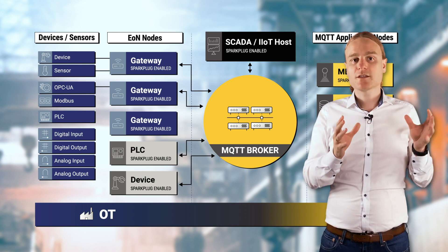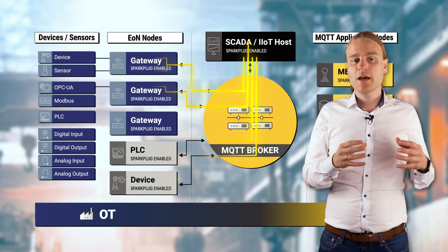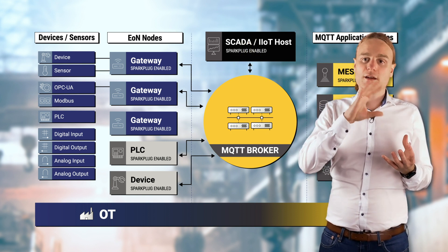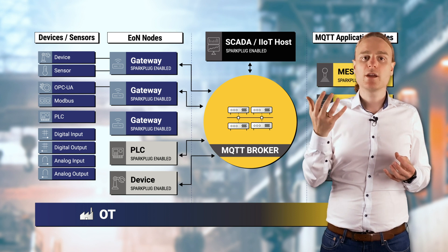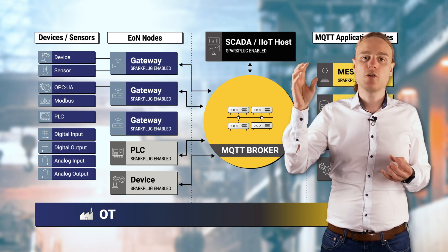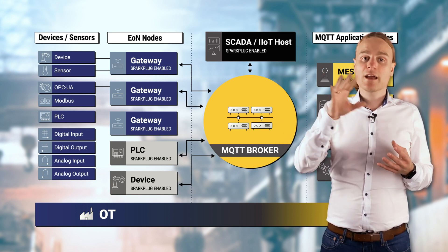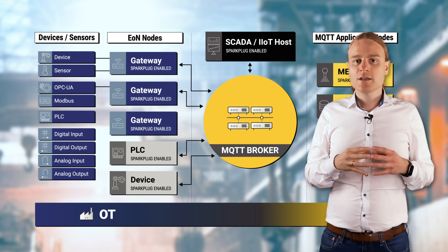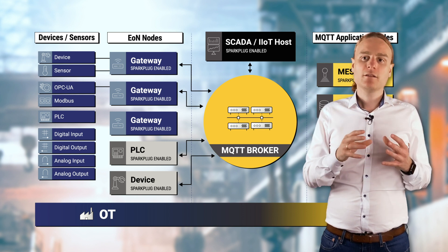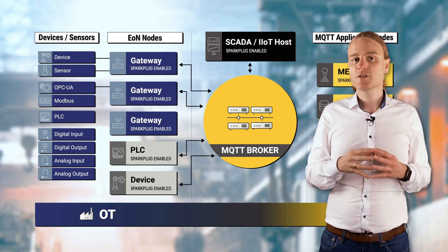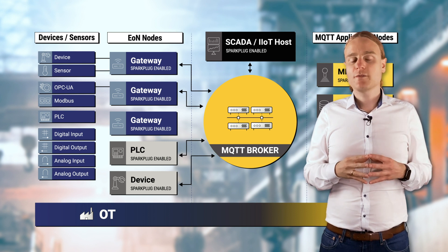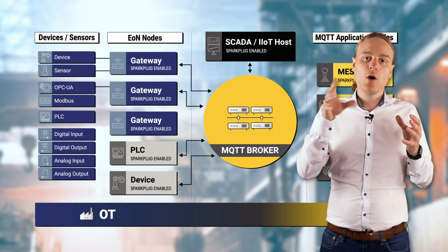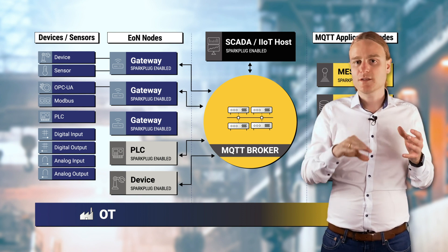Chances are you have many of these devices and sensors, and it's very important — as we've seen with the primary application — that the state of these devices is managed so that the SCADA system or primary application can monitor what's happening in the field and also act on that. If you can, it makes sense to connect directly to Sparkplug, but especially in brownfield environments you really want an edge of network node to manage all the state of your devices and sensors.